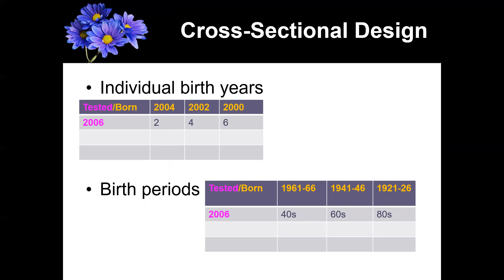In contrast, you might want to look at a range of years — comparing people in their 40s to people in their 60s to people in their 80s. How you set up your cohorts depends on your research question, and it often has a lot to do with whether you're looking at earlier versus later stages of development. A two-year-old is very different from a six-year-old, whereas a 40-year-old is not very different from a 44-year-old. In late adulthood, changes are much more gradual, so you'd group by decade rather than by individual year.